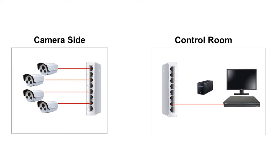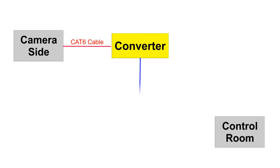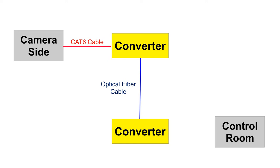We have reviewed the architectures both at the camera location and at the control room, and what equipment is required at both these locations. Next we will design the network between these two locations. As the distance is in kilometers, we will consider laying optical fiber cable for connectivity. At the camera end, we will convert the CAT6 electrical signals into fiber signals, which are then carried over the fiber cable network up to the control room. At the control room, we will again convert the fiber signal back to CAT6 electrical signals.